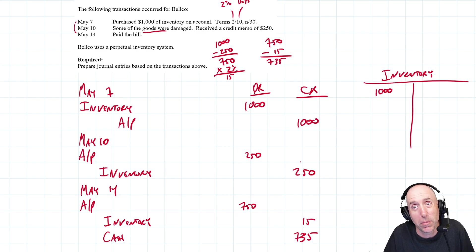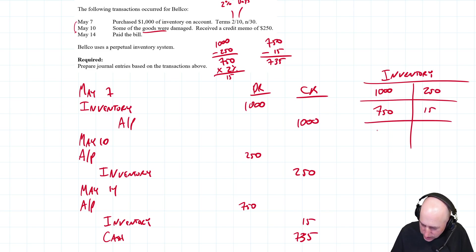The easiest way to summarize this is to just look at our inventory account through all of this. We had $1,000 worth of inventory, we said no, $250 of this inventory is garbage, we received it, it was damaged, we didn't want it, so we sent back the $250 or we threw it in the garbage.